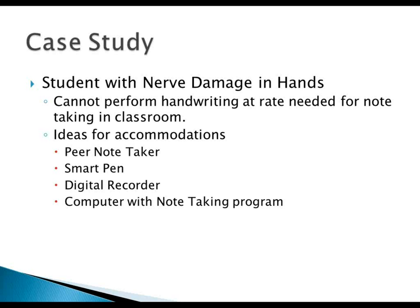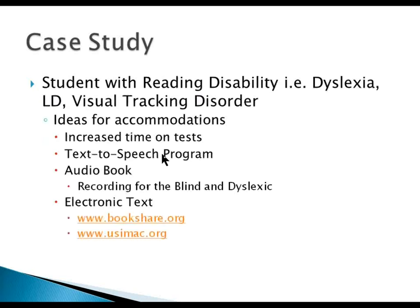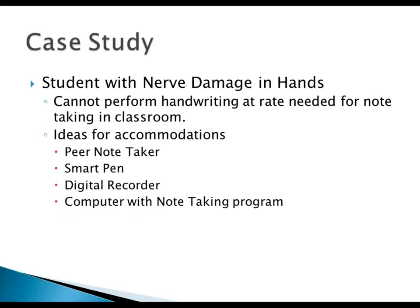Here's a case study: a student with nerve damage in their hands, or some other condition where they're not able to write as fast as their peers. They hit seventh grade and suddenly they're expected to sit in class and take notes while the teacher talks a mile a minute. One accommodation idea would be a peer note taker — but the problem with peer note takers is you better hope you get a good one. You don't want your scatterbrained buddy taking your notes.